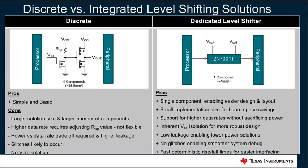Dedicated level shifter solutions such as the 2N7001T provide multiple benefits over discrete implementations. With the 2N7001T, a single component replaces multiple discrete components, reducing board space and eliminating the complexity of connecting multiple devices. The 2N7001T also enables system designers to achieve higher data rates without sacrificing power, as well as much better signal performance. The integrated nature of the device inherently provides VCC isolation as well as better overall signal performance that results from deterministic rise and fall times, enabling much easier interfacing to downstream components. Overall, the 2N7001T versus a discrete solution provides a much more robust solution for implementing simple unidirectional push-pull level shifting applications.